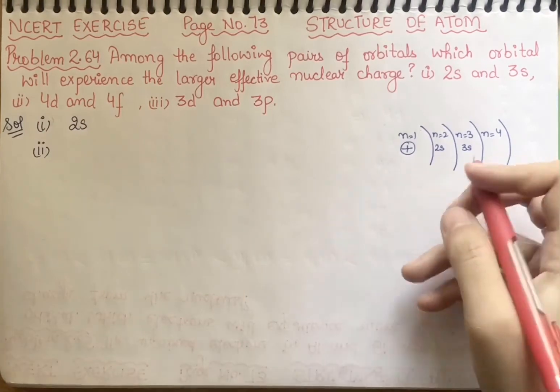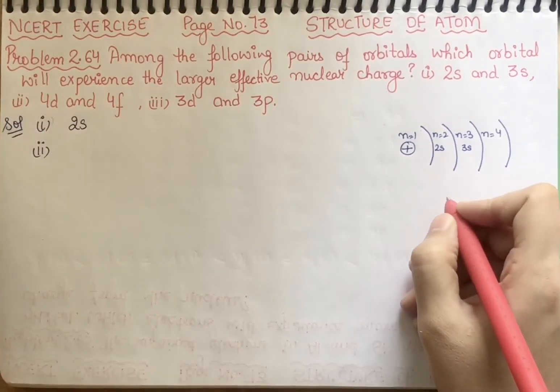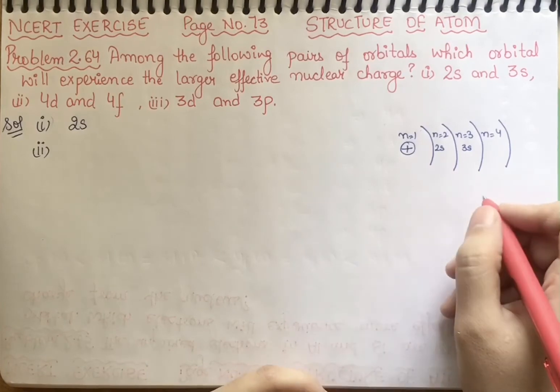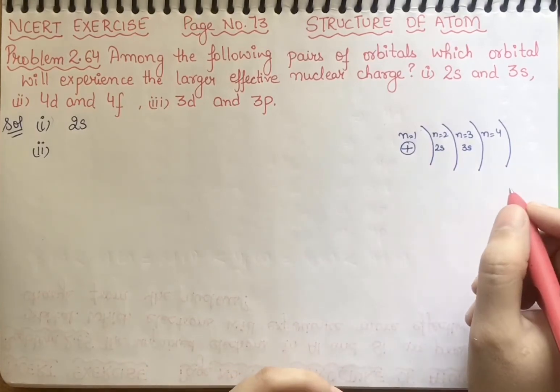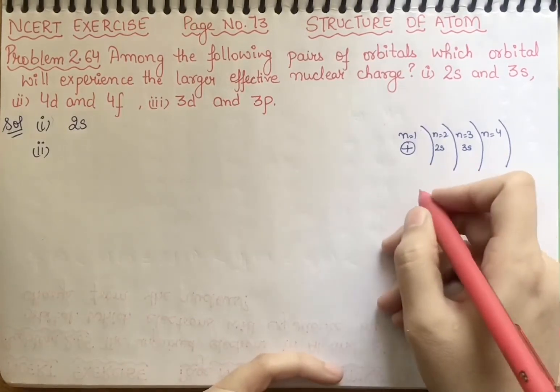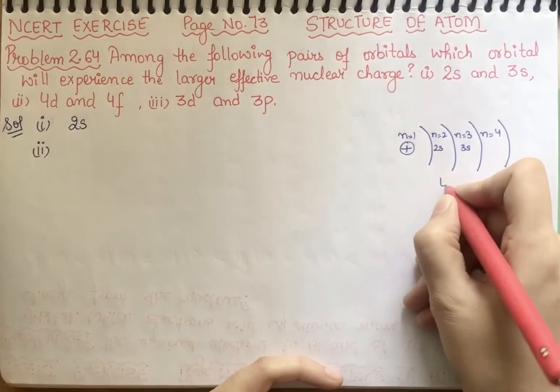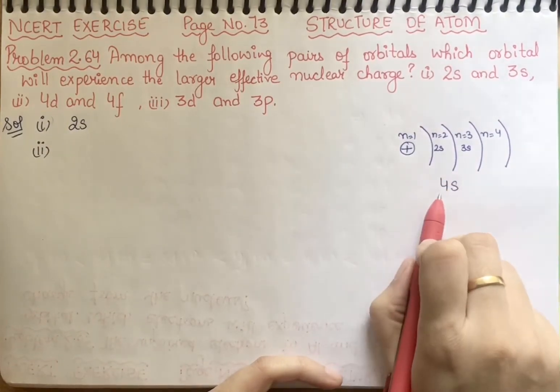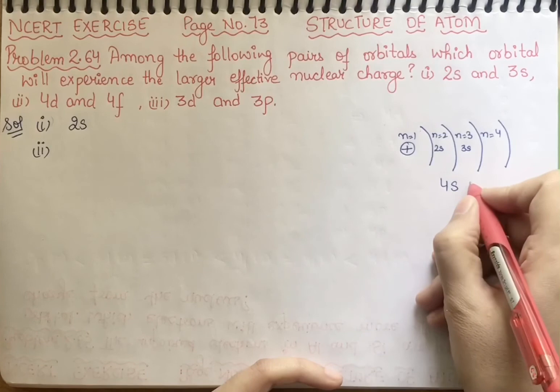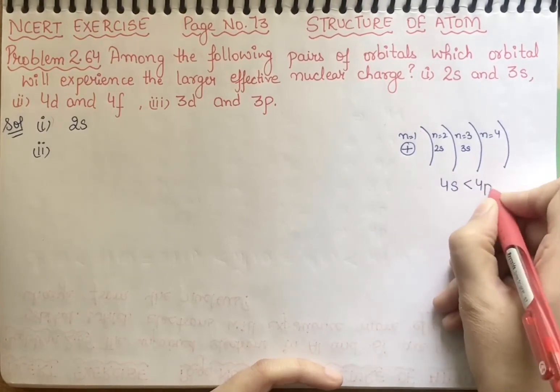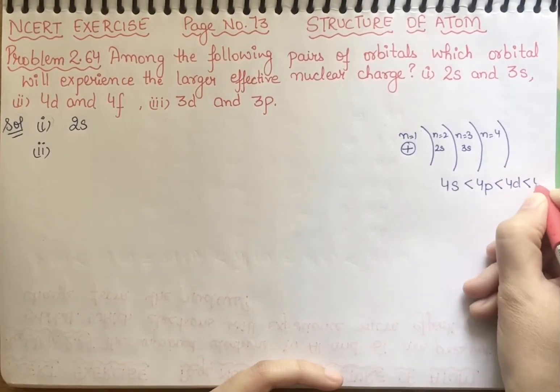Now, how will we know that? According to Aufbau principle, increasing order of energy with respect, we have electron filling. So if I talk about 4, then first which electron will fill? In 4s, then in 4p, then in 4d, and in 4f.